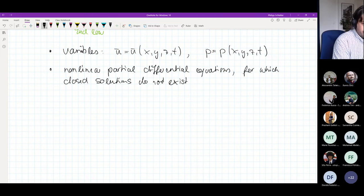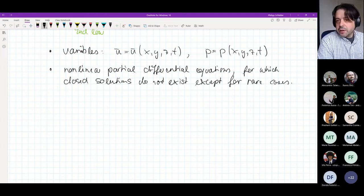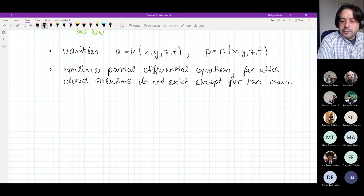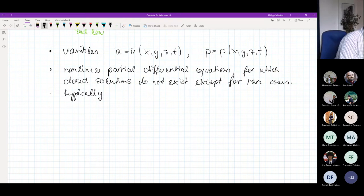Of course, these rare cases, some of them we're going to discuss, will be for instance Couette flow, but there's also pipe flow, channel flow, where we can actually solve these Navier-Stokes equations. These exact solutions are typically very idealized cases. We typically call these idealized cases also canonical cases.